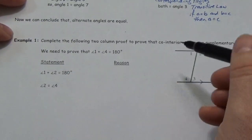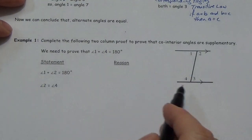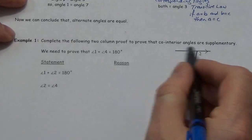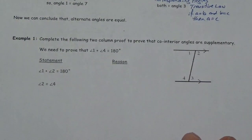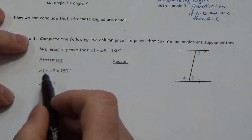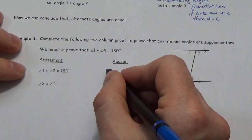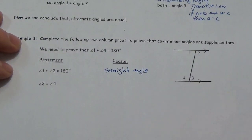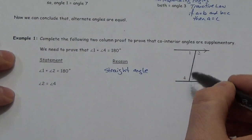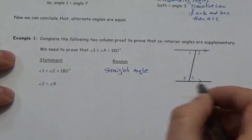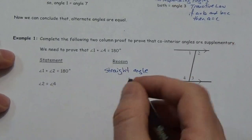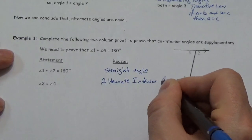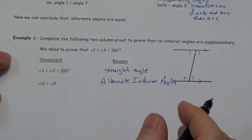We need to prove that angle one plus angle four equals 180 degrees. We're not being super picky here — there are certain things we'd have to establish first, like that these lines are parallel, but we're just introducing the flow of the proof. So: angle one plus angle two equals 180 degrees — that's a straight angle. When two angles form a straight line, they add up to 180 degrees. Now, angle two is equal to angle four — we would need to have established that these two lines are parallel, but looking at our diagram that's okay. The reason is that they are alternate interior angles.